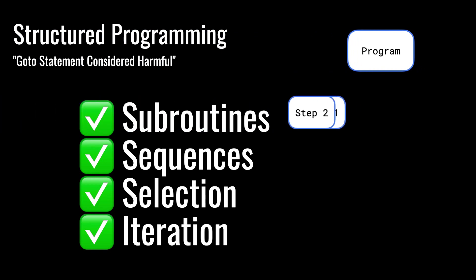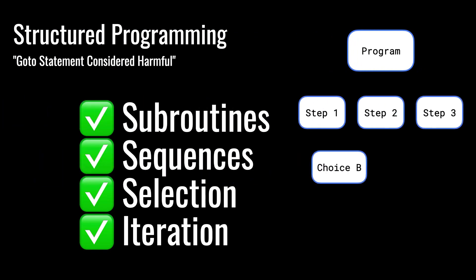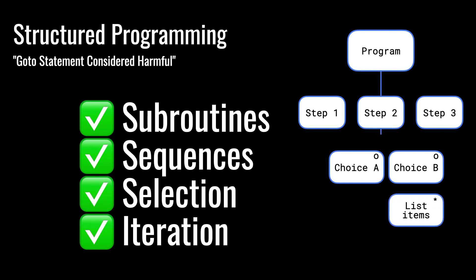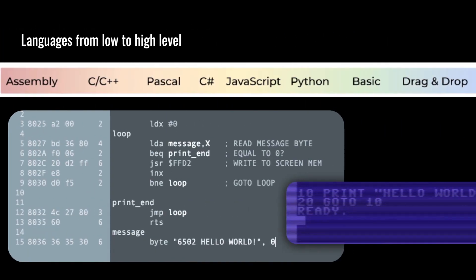The reason Dijkstra had a thing against Basic was because of some hacky things you used to have to do back in the day. But Basic actually does contain everything you need to do what is, quote, structured programming. You need subroutines — breaking your program down into smaller pieces. You need sequences — doing one thing after another. You need selection — if this is the case, do this; otherwise do this other thing. And you need iteration — doing something continuously until a value or condition is set.